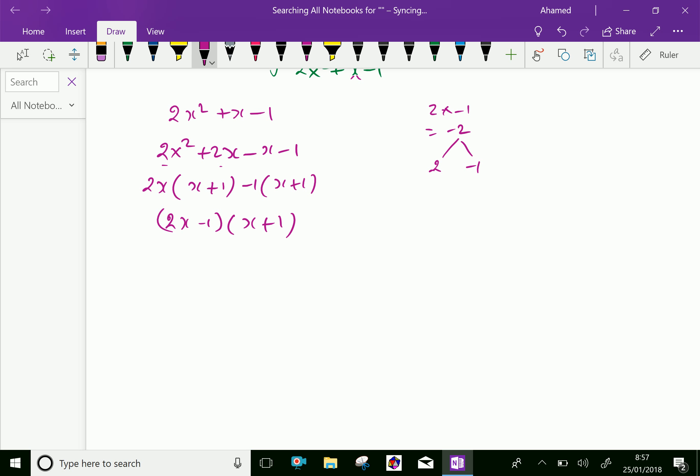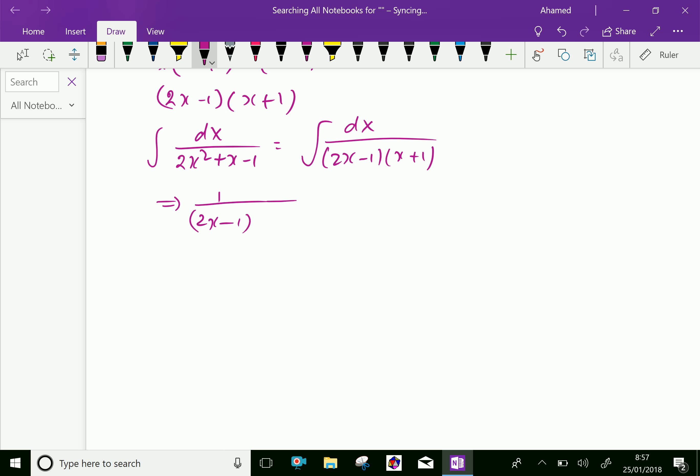Now, let us write one more time the integration: that is dx over 2x square plus x minus 1, which equals dx over, by factors we can write 2x minus 1 and x plus 1. Now, we will write this as a over 2x minus 1 plus b over x plus 1. Here, a and b are some constants.